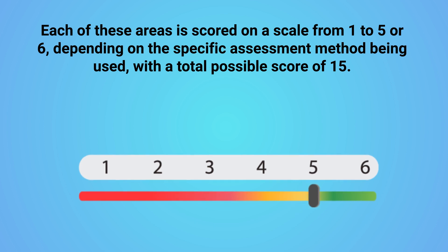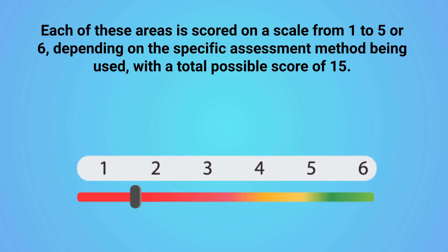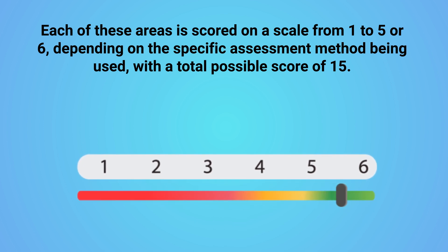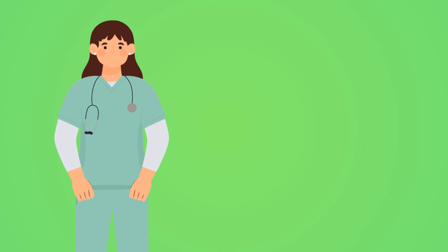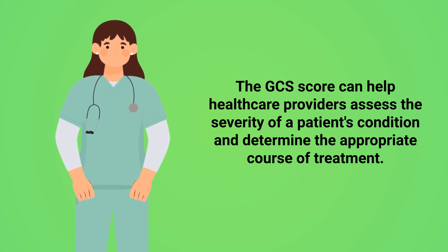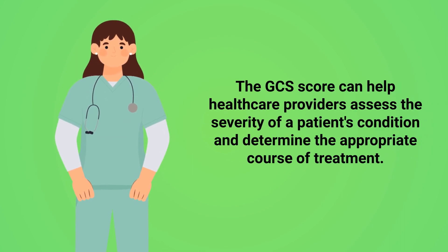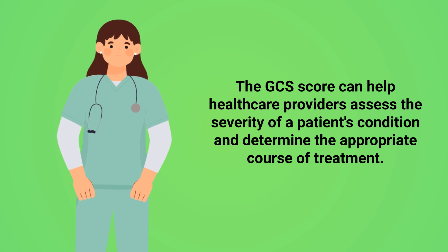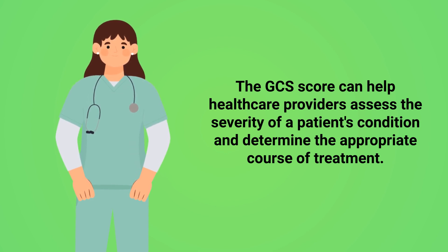Each of these areas is scored on a scale of one to five or six depending on the specific assessment method being used, with a total possible score of 15. The Glasgow Coma Scale can help healthcare providers assess the severity of a patient's condition and determine the appropriate course of treatment.